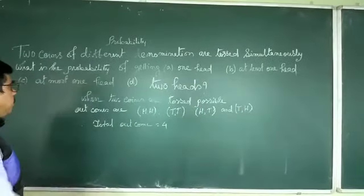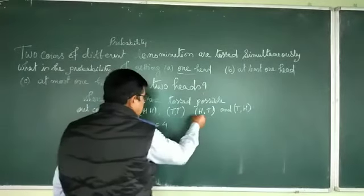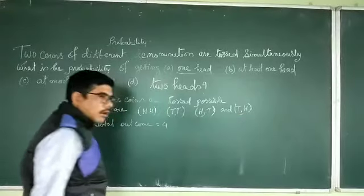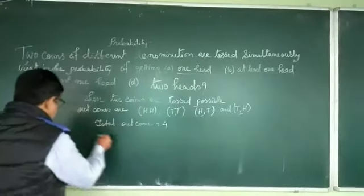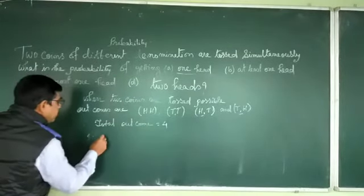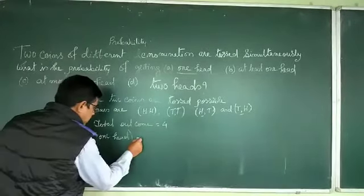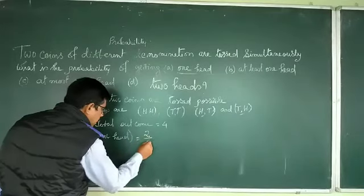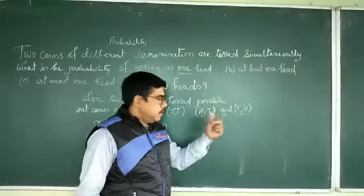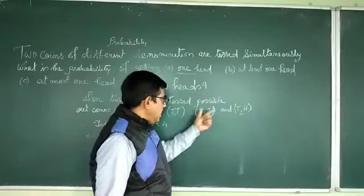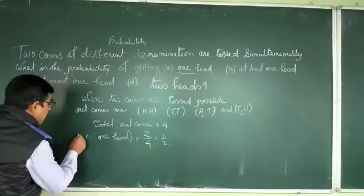Out of these four outcomes, we have to find the probability of one hit. You can see one hit here and one hit here — so two times out of four. Therefore, the probability of one hit is two by four, which equals one by two.